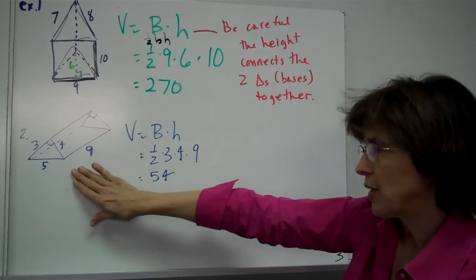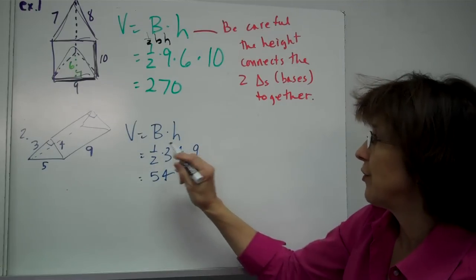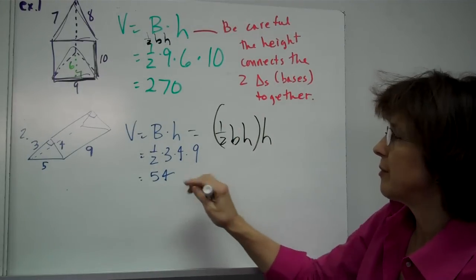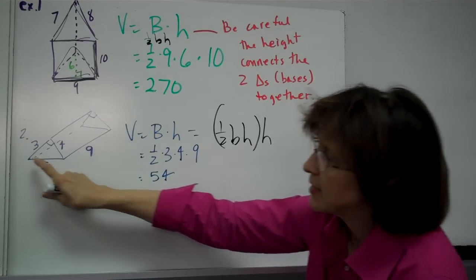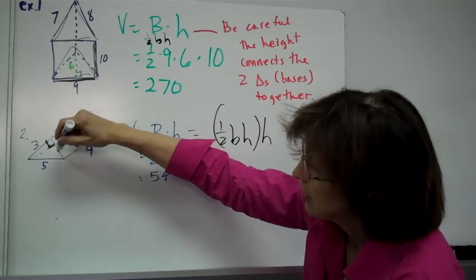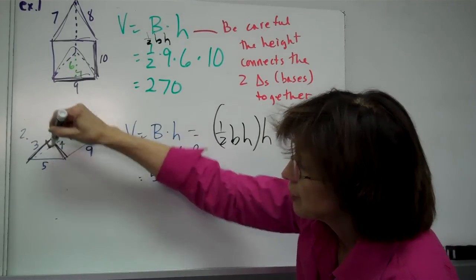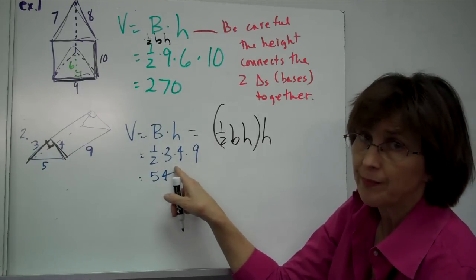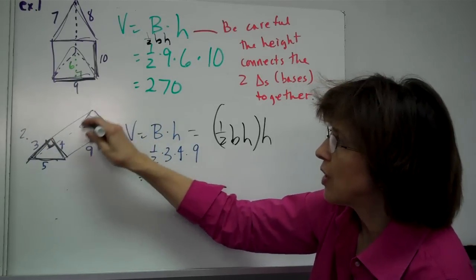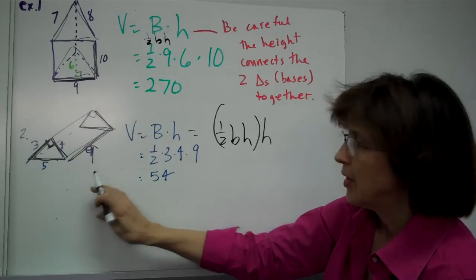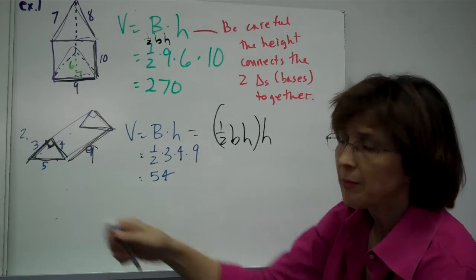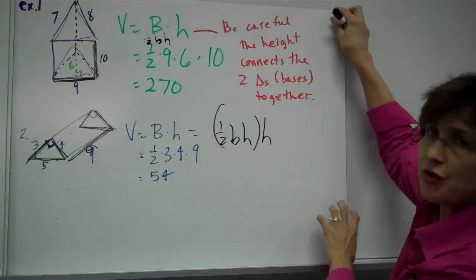For number two, you have a laid-out triangular prism. Always write down the formula first: one half the base times the height of the triangle times the height of the whole prism. Be careful — the base is not five this time. The base of the triangle is wherever you have that square indicating a right angle, so it's going to be the four and the three. It doesn't matter which you call base and which you call height — four times three either way. The height of the whole prism is the number connecting the two triangles, which is nine. So it's one half times three times four times nine, which equals 54. We didn't even use the five — you'll have numbers you won't use, and you have to get used to which ones you need.